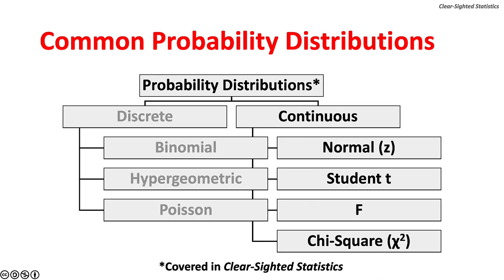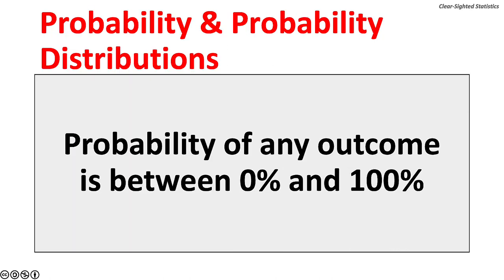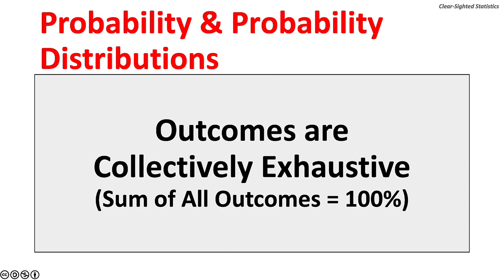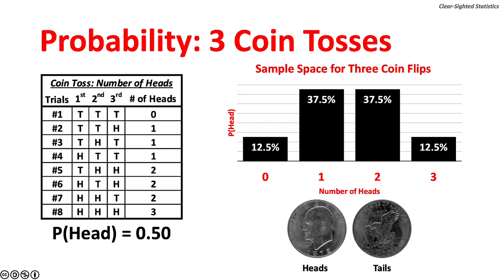Four common continuous probability distributions will also be covered in clear-sighted statistics: normal, student t, f, and chi-square. As with any probability calculation, the probability of any outcome is between 0% and 100%. Outcomes are mutually exclusive and they are collectively exhaustive, which is to say the sum of all outcomes equals 100%.